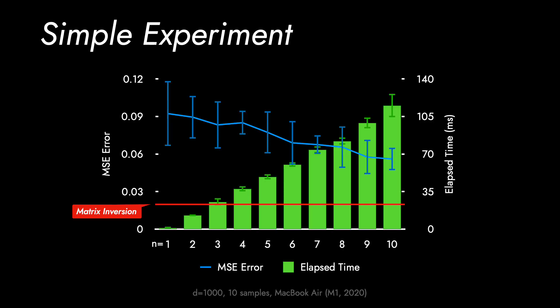In our simple experiment, it verifies, as expected, the mean square error decreases as the number of terms n increases while the elapsed time is linearly increasing. Note that the elapsed time of matrix inversion is almost the same with that n equals 3.